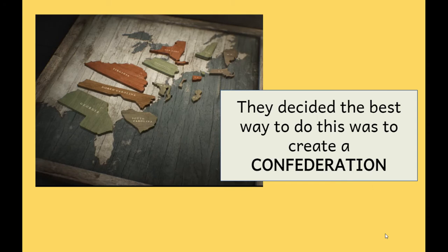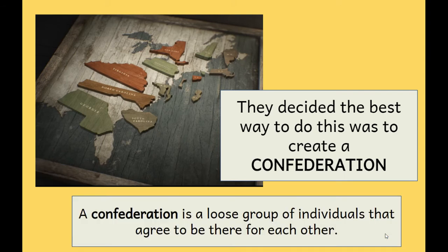They decided the best way to make a government opposite of King George III was to create a confederation — that's probably a new vocabulary word for you. A confederation is a loose group of individuals that agree to just sort of be there for each other. Today in 2021, we are the United States and the states work together under one government. But with this first government, the states looked more like what you see on the map on the screen, where the states were all sort of separate, loosely together because they were next to each other, but not really one united country like we are today.